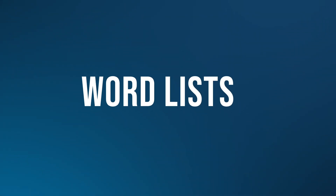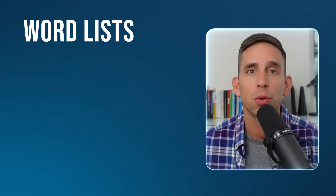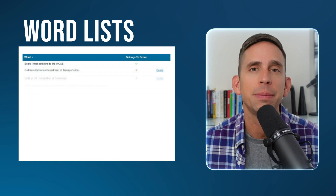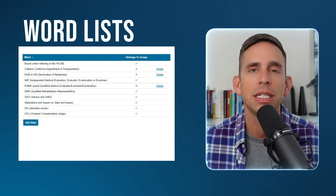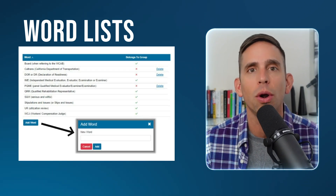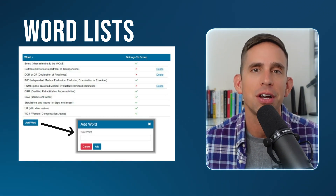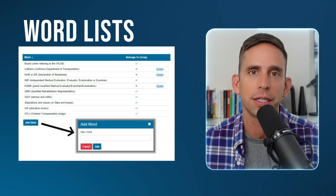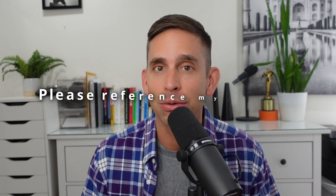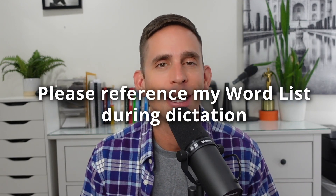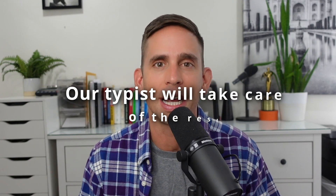Tool number two is word lists. With your personal word lists, you can spell out names, acronyms, or any words that are not familiar to our typists. Simply say, please reference my word list during dictation, and our typist will take care of the rest.